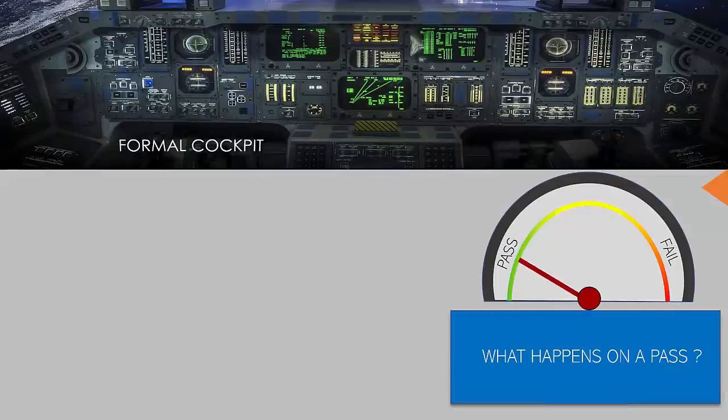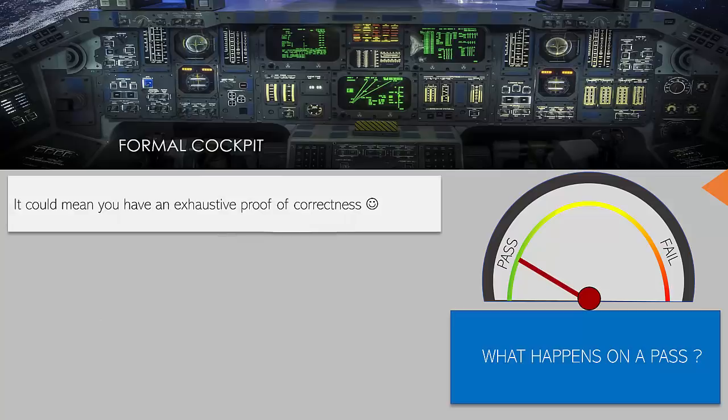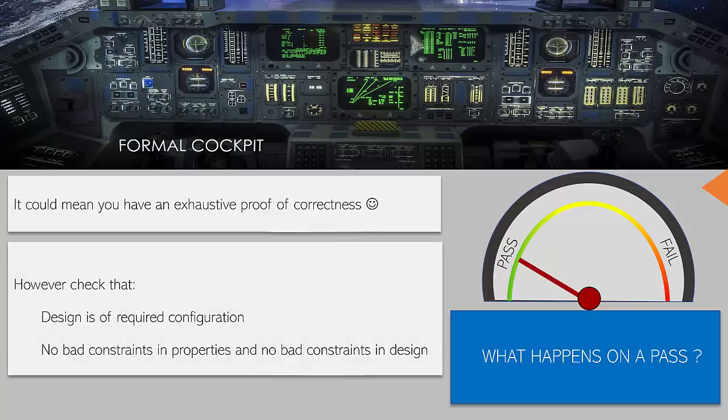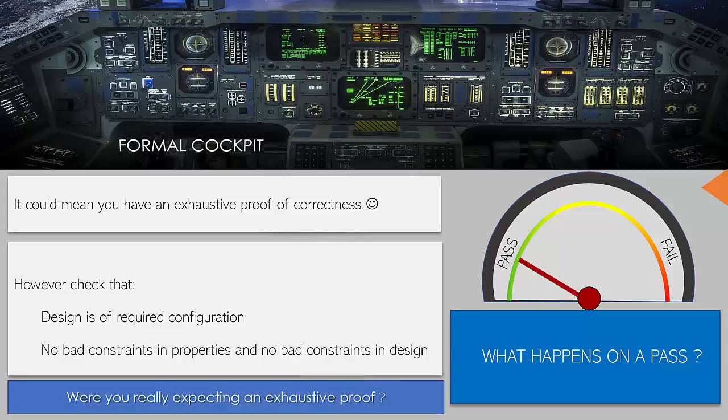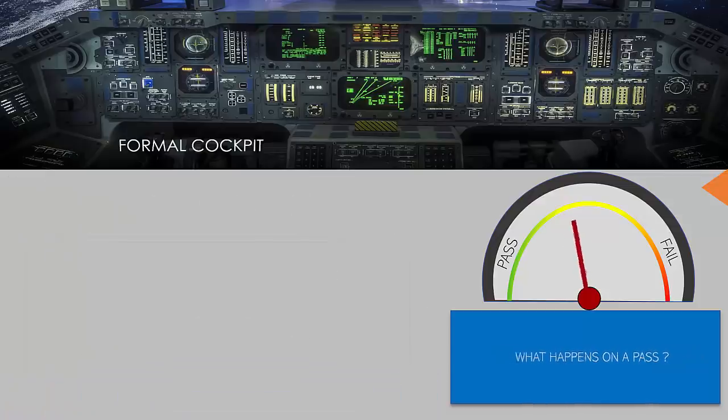So let's take a look at our formal cockpit more closely. What happens on a pass? Well, it could mean that you have an exhaustive proof of correctness - that's great. But you have to check that the design is of required configuration. We want to make sure that we don't end up checking configurations that are too small for the design. There are no bad constraints in properties and no bad constraints in the design - two areas where you could introduce constraints. You've got to ask yourself, were you really expecting an exhaustive proof?